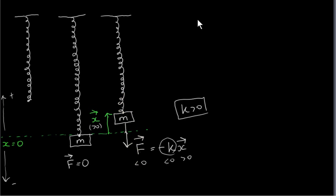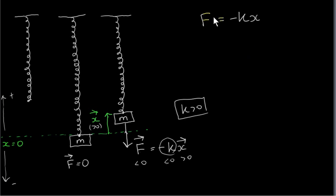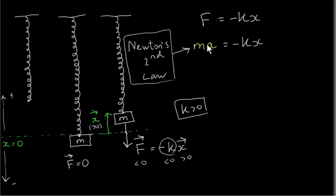In this video, we want to take a look at the equation F equals minus kx and try to solve it. In other words, we are going to try to find x as a function of time — the position of the bottom end of the spring, or the mass, at any time t. I have dropped the arrows from F and x because we are dealing with vectors in one dimension, where the sign of F or x gives us the direction. By Newton's second law, the resultant force on an object is the mass times the acceleration — so this is the mass M times its acceleration.